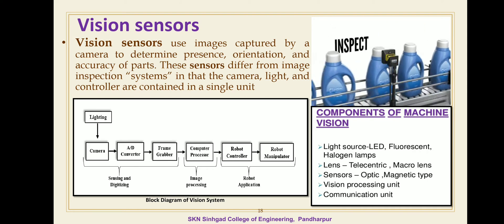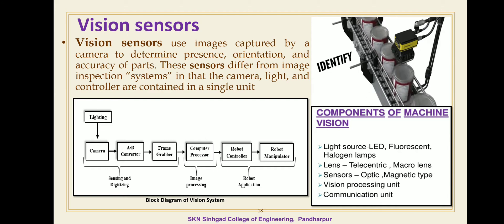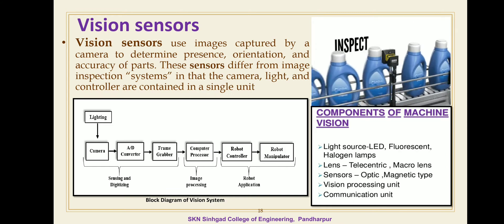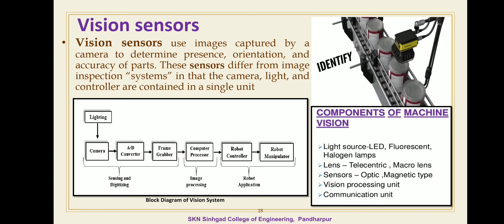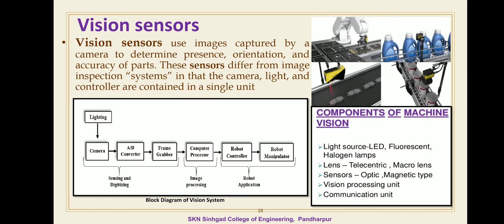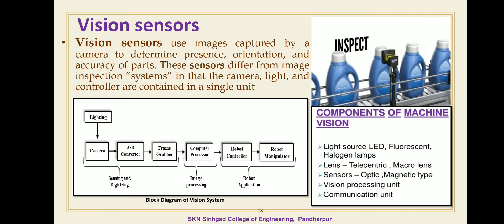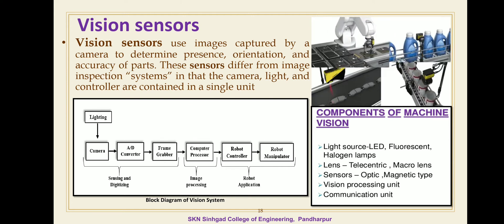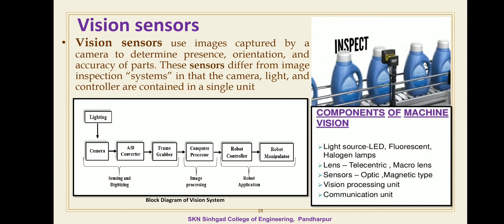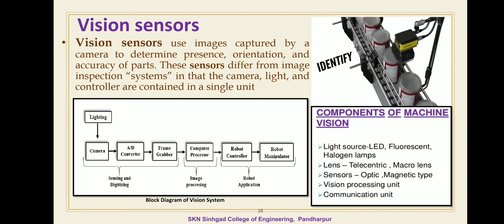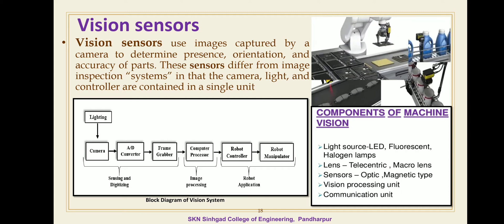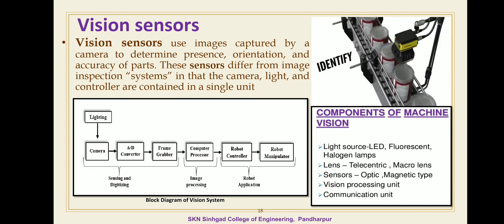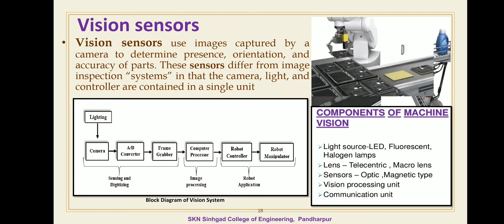Today we are going to discuss the next sensor: the vision sensor, or robotic vision sensor. Robotic vision is an important sensor technology with potential applications in many industrial applications. Robotic vision may be defined as the process of extracting, characterizing, and interpreting information from images in the three-dimensional world. There are different functions and components involving the vision system.